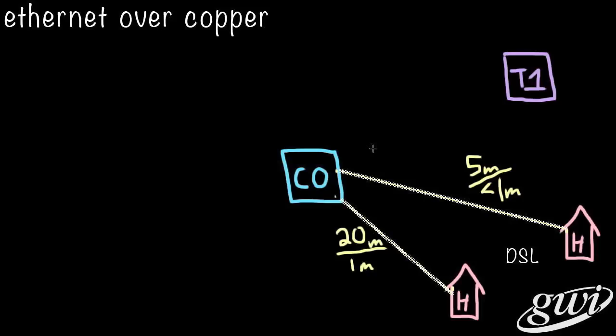So just like the DSL service, we use the copper telephone wires from the CO to provide the T1 service. For a single T1, we use two pairs of copper wires. We refer to those copper wires as loops.